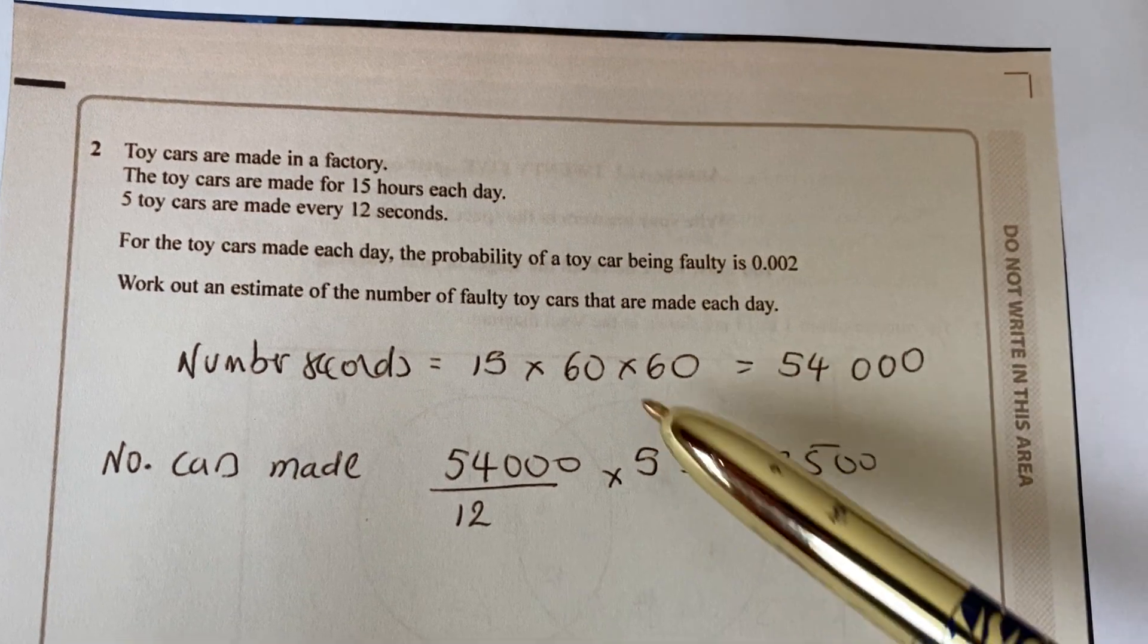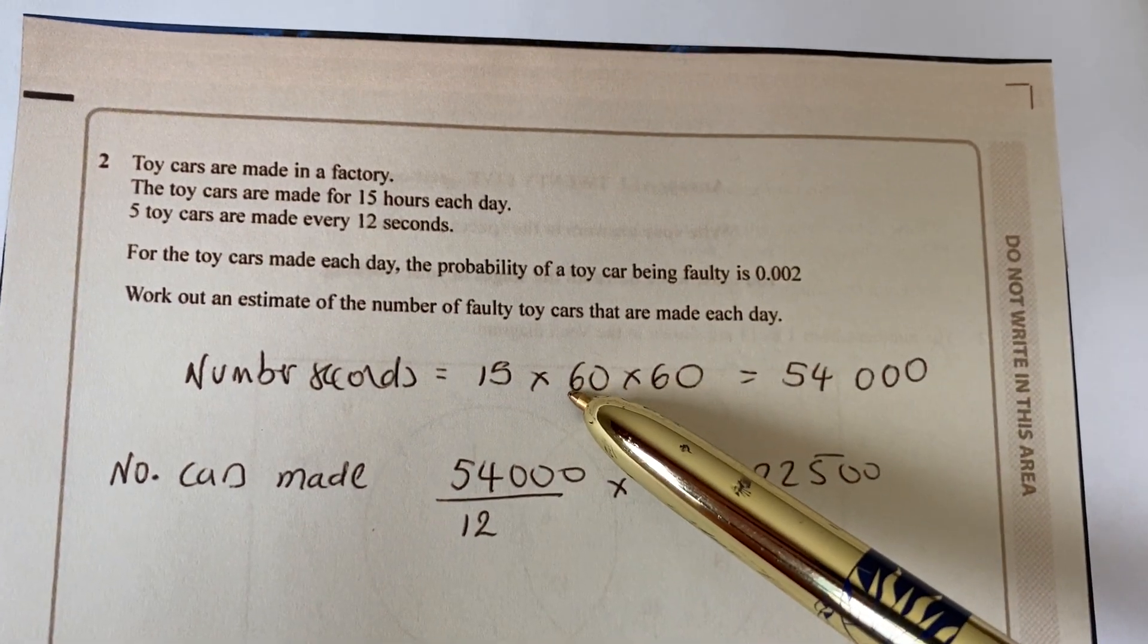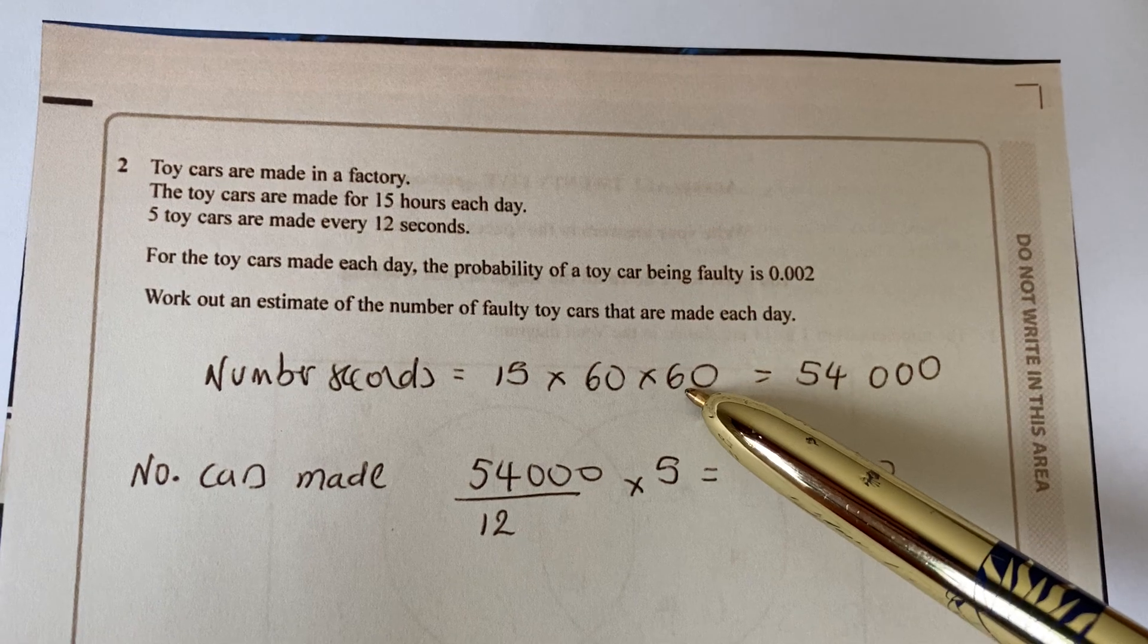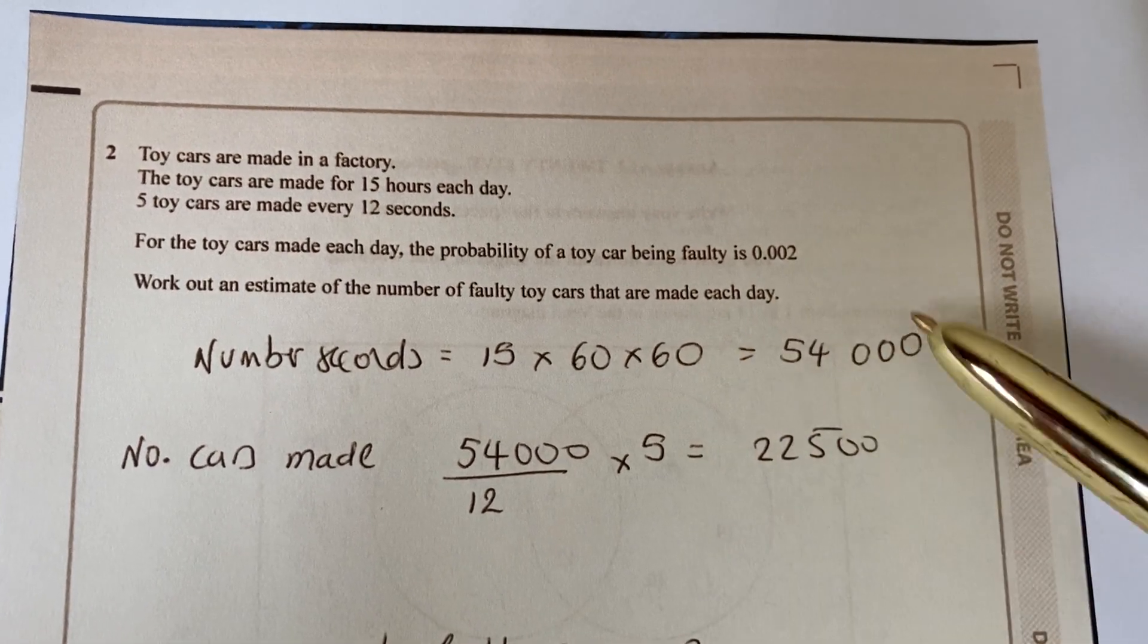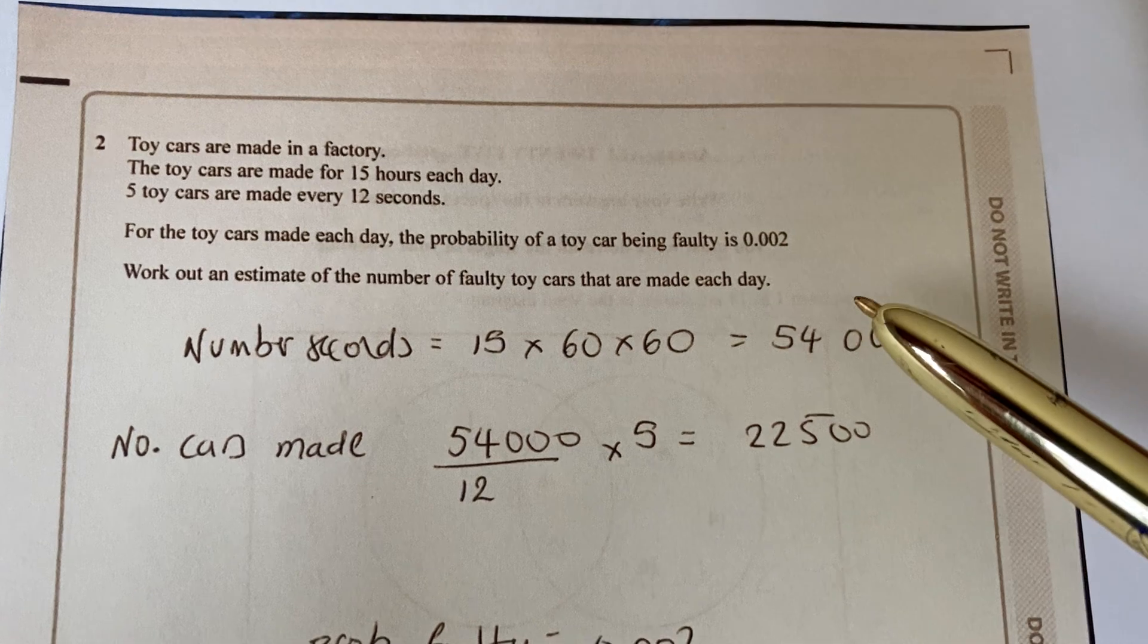So in seconds, times that up by 60 to turn it into minutes and then times it by 60 again to turn it into seconds. So there are 54,000 seconds altogether that we're making cars.